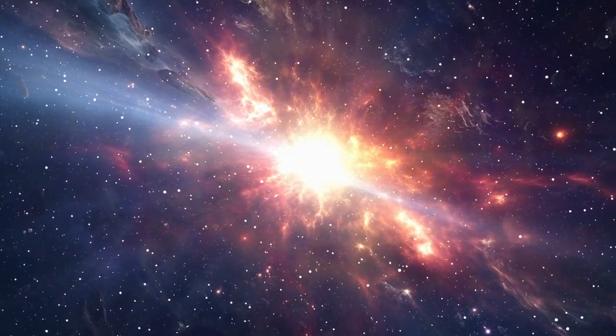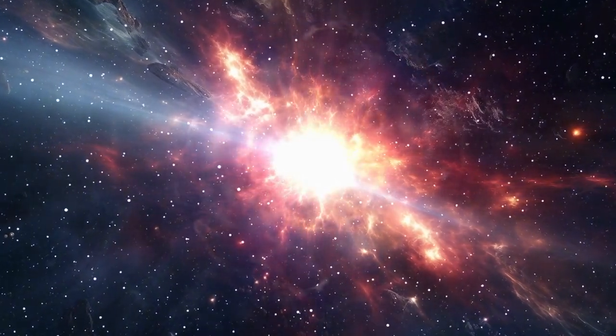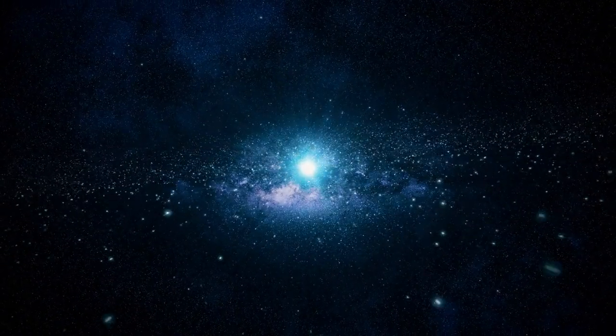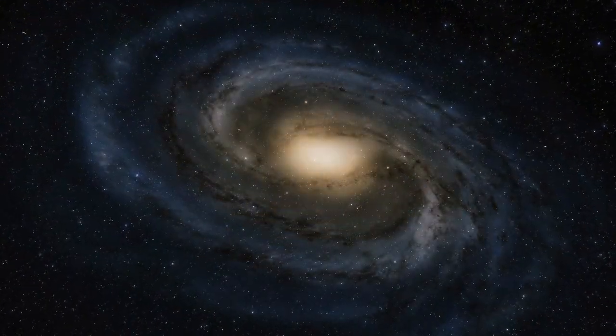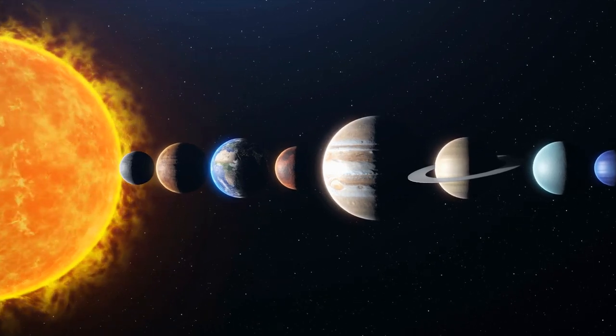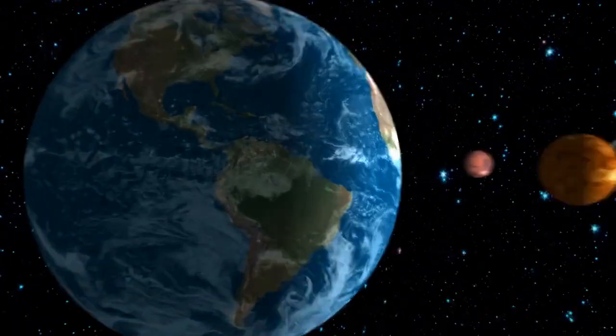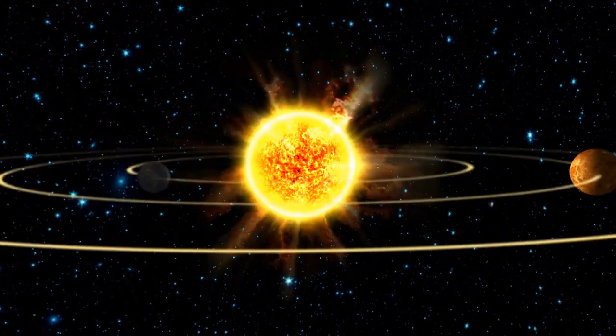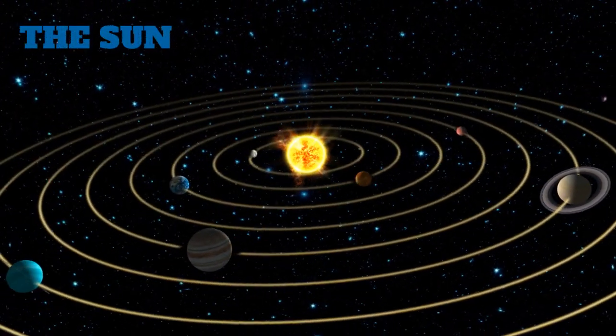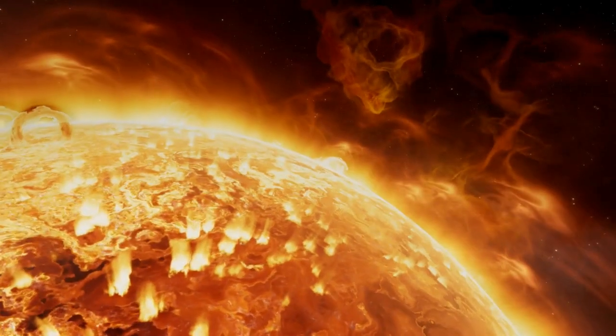Our solar system began 4.6 billion years ago when a cloud of gas and dust collapsed. It is one of 500 solar systems in our galaxy, the Milky Way. Our solar system includes eight planets orbiting around one star, the Sun, a massive hot ball of plasma that makes up 99% of the total mass of the solar system.